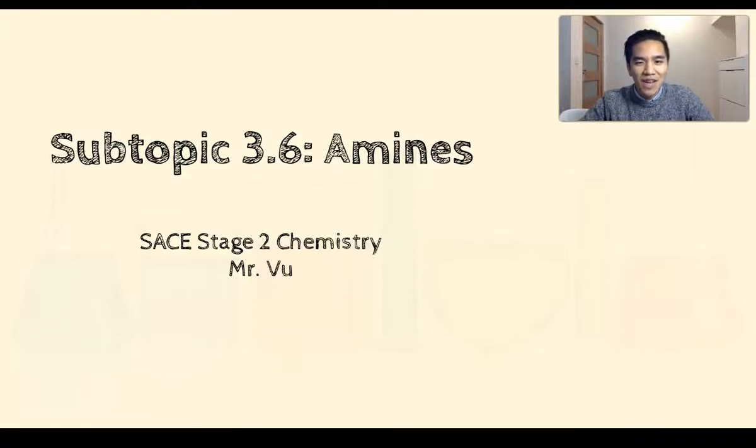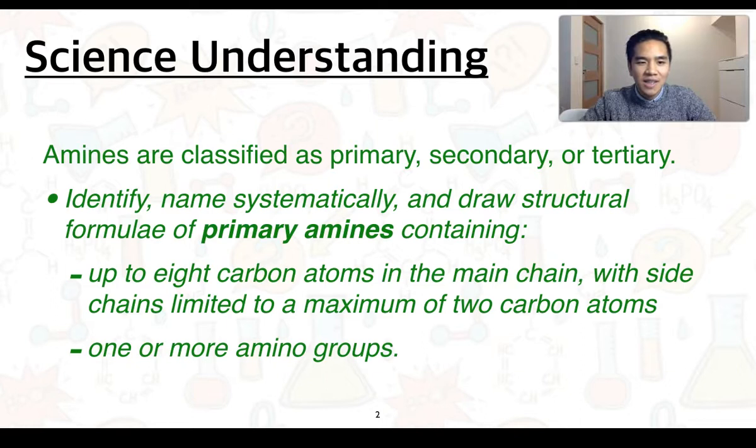Welcome to subtopic 3.6 on amines. This is our first science understanding. Amines are classified as primary, secondary, or tertiary. You need to know how to identify, name systematically, and draw structural formulae of primary amines containing up to 8 carbon atoms in the main chain, with sidechains limited to a maximum of 2 carbon atoms, as well as one or more amino groups.